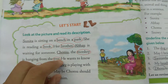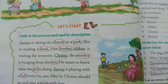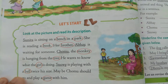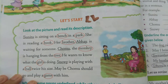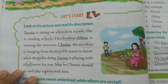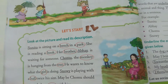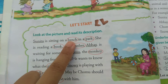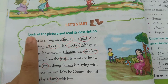So, noun kya hote hain? Jo apne padha hain — name, place, animal, and thing. Jo naam batata hain — name, place, animal, and thing. Okay.